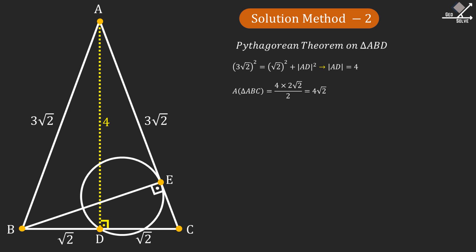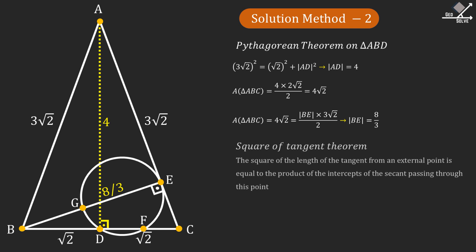Since we know the area, we can find the other height of the triangle, which is line segment BE. From here the length of line segment BE can be calculated as 8 over 3 units. Now let's name these two points as F and G, and then let's remember the square of the tangent theorem. This theorem states that the square of the length of the tangent from an external point is equal to the product of the intercepts of the secant passing through this point.